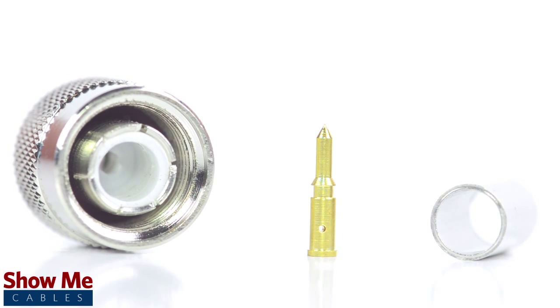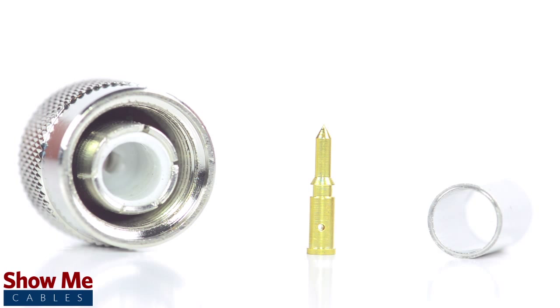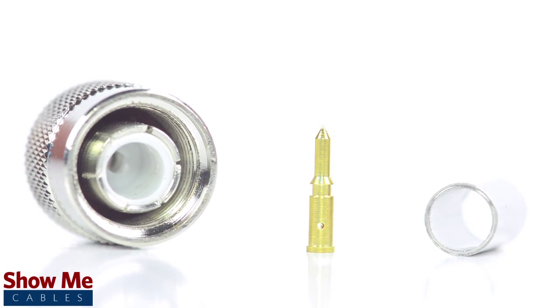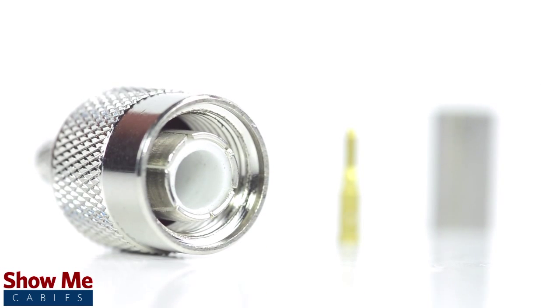The three-piece connector consists of the connector housing, the pin, and the ferrule. For this installation you will need a coax stripper, coax cable, a soldering iron, a crimp tool, and the TNC connector.